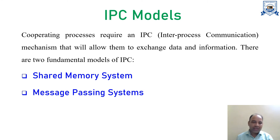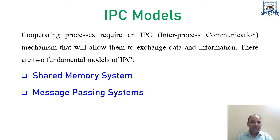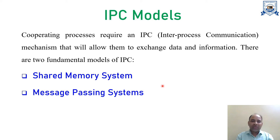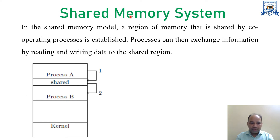This slide shows the different inter-process communication models. Cooperating processes require IPC — they require communication or information sharing for different reasons: information sharing, computational speed-up, modularity, and convenience. Cooperating processes require an inter-process communication mechanism that will allow them to exchange data and information. There are basically two fundamental models of IPC: shared memory system and message passing system, both having their own advantages and disadvantages.